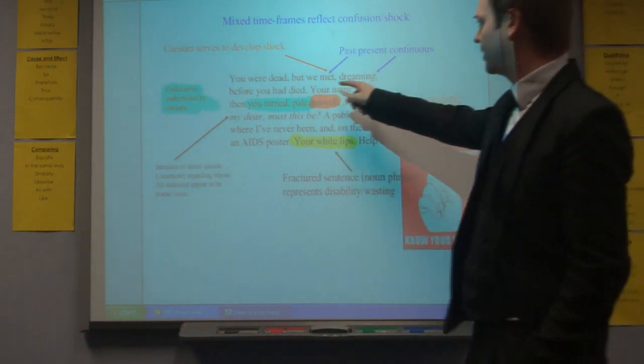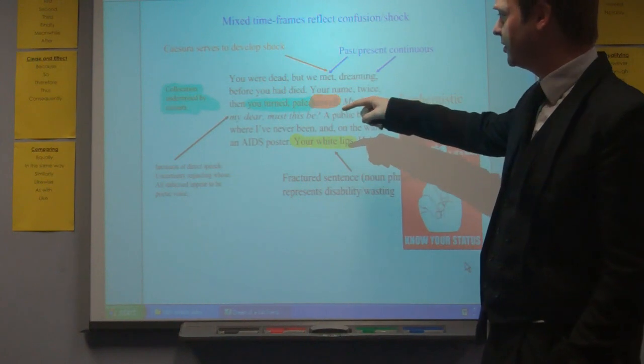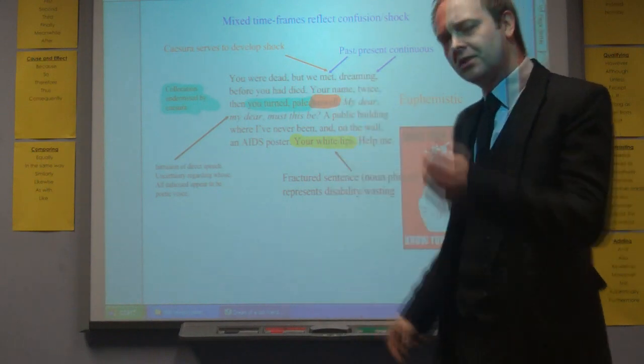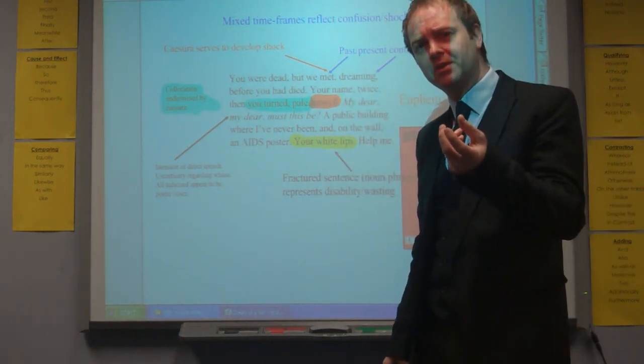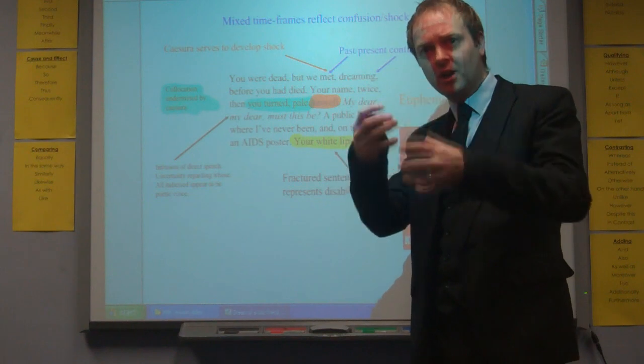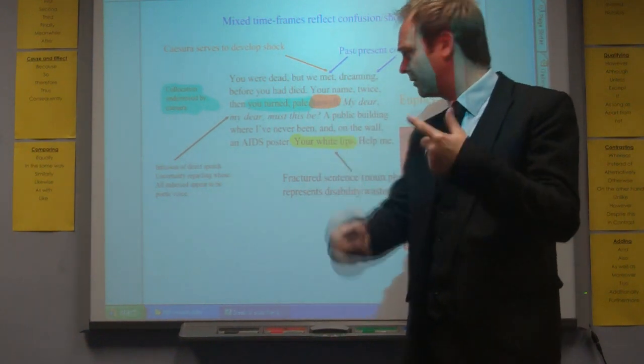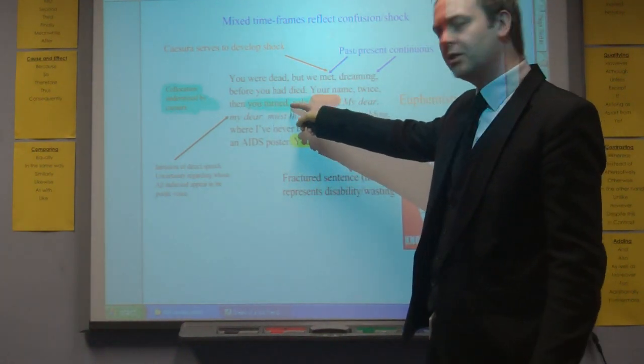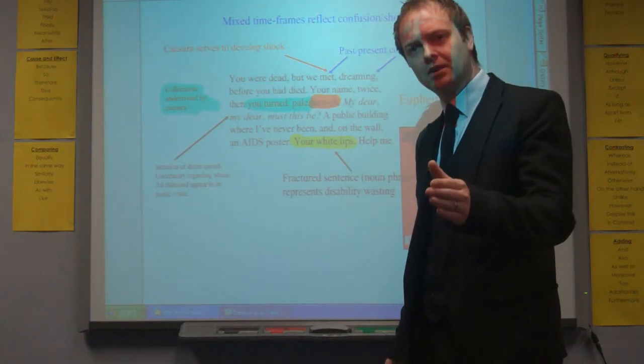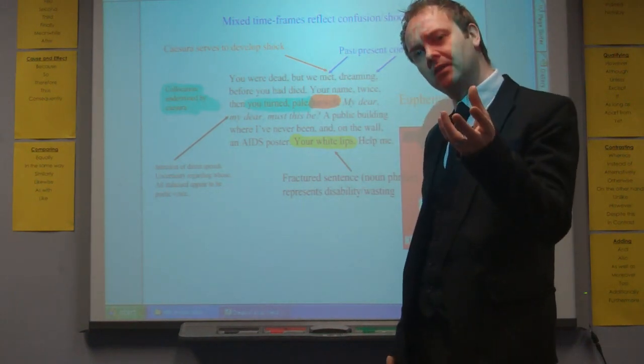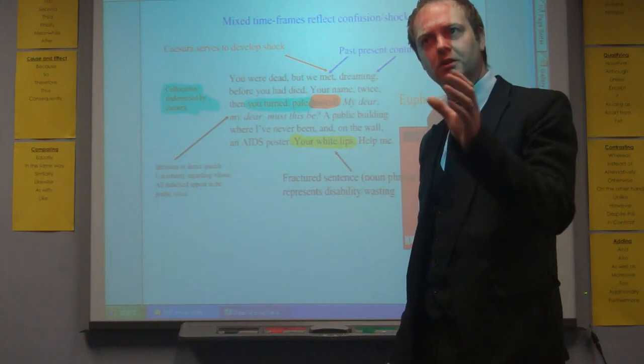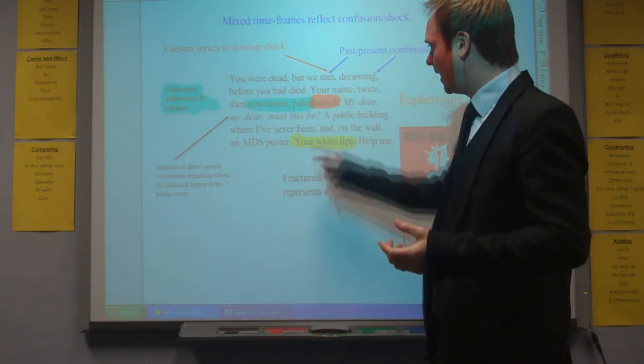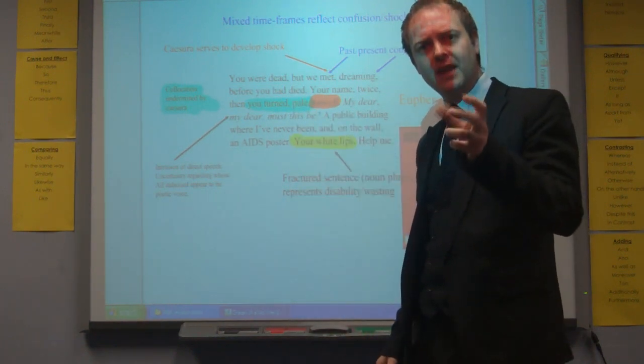If we have a look at the way in which the confusion is created, partly it can be through the caesura. You were dead, but we met, dreaming. So the caesura forces a pause and creates a degree of ambiguity. We're forced to regard polysemic ideas. There's a possibility of a couple of different meanings. And that's also true down here. Then you turned pale. If you look at the caesura, then you turned, as if the friend is turning round. But we can't avoid the collocation of turned pale, as if in fear or through illness. And that caesura helps to create that ambiguity.